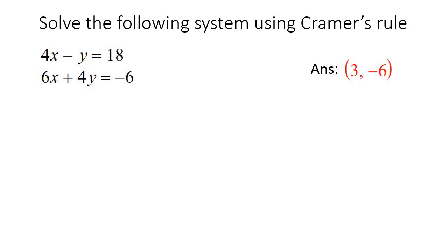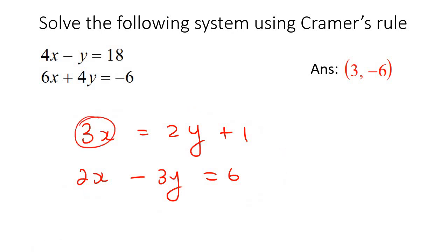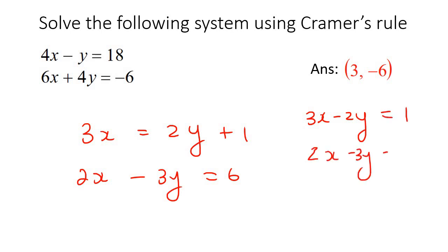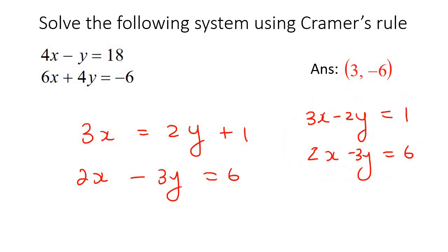Step one: make sure you always have your x's first, then your y's, and then the numbers on the other side. If a system isn't in that form — for example, if there's a 2x on the right side — that is not the correct setup for Cramer's Rule. You want the x's first, the y's on the left-hand side as well. Take any y term from the right to the left where it becomes negative. Once you have it like that, x's and y's on the left with the constant on the other side, then we can use Cramer's Rule.